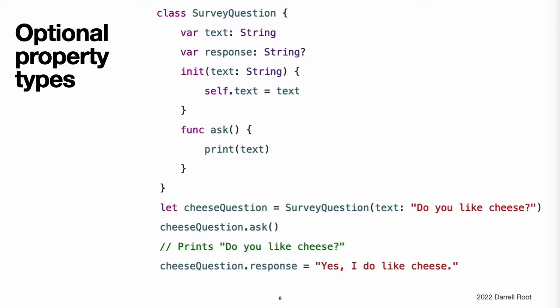Optional property types. If your custom type has a stored property that is logically allowed to have no value — perhaps because its value cannot be set during initialization, or because it is allowed to have no value at some later point — declare the property with an optional type. Properties of optional type are automatically initialized with the value of nil, indicating that the property is deliberately intended to have no value yet during initialization. This example defines a class called SurveyQuestion with an optional String property called response. The response property is declared with a type of String? because the response to a survey question cannot be known until it is asked. It is automatically assigned a default value of nil when a new instance of SurveyQuestion is initialized.